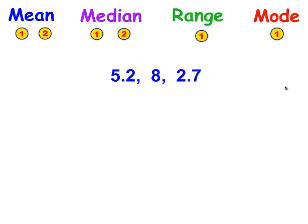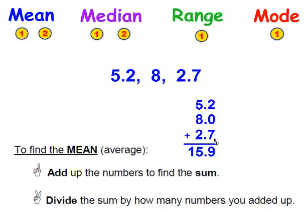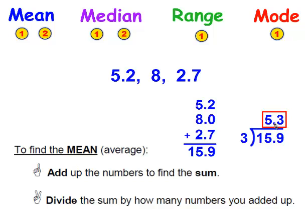Let's try it again, this time with decimals in the numbers. To find the mean, you add the numbers up to find the sum. Don't forget: if you don't see a decimal point in the number, there's an invisible one at the end, so when you line it up, make sure the 8 is in front of that decimal point. When you add them all up, you get 15.9. Then take that sum and divide it by how many numbers you added up — 3 numbers. 15.9 divided by 3 is 5.3. Don't forget to float the decimal point up.